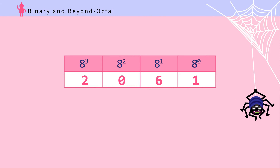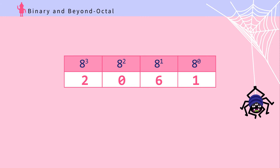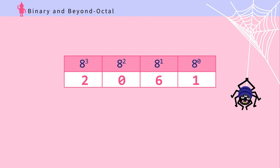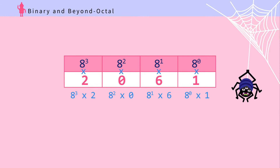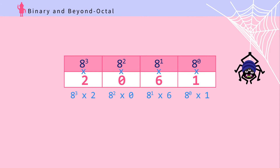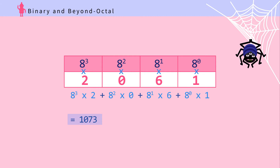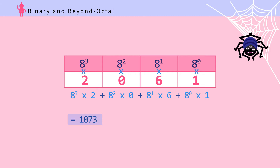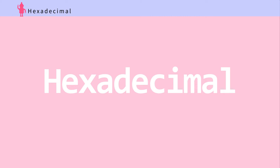On top of each digit, put the place value. From the rightmost place: eight to the zero, eight to the one, eight to the two, eight to the three. Step three: multiply the place value with the octal digit to get the actual value of each place. Step four: add them all up. That is 1073 children. Wow!